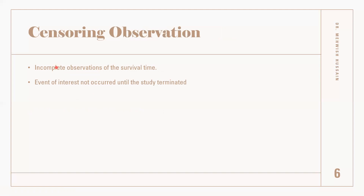A censored observation means either an incomplete observation of the survival time — like we were lost to follow up and we don't know whether the outcome of interest occurred or not. Maybe the patient was referred to another hospital or the patient discontinued treatment. Or maybe the event of interest did not occur — like we were interested in death from lung cancer, but the patient died from a car accident. So that observation becomes a censored observation.